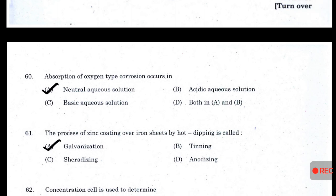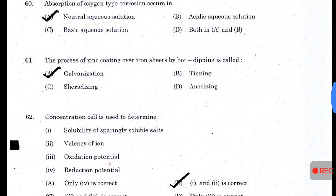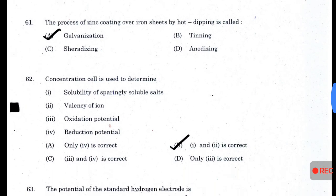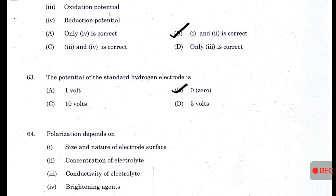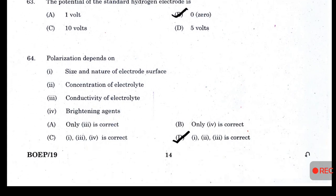Absorption-of-oxygen type corrosion occurs in neutral aqueous solution. The process of zinc coating over iron sheets by hot dipping is called galvanization. A concentration cell is used to determine — answer D — solubility of a sparingly soluble salt and valency of iron. The potential of the standard hydrogen electrode is zero. Polarization depends on size and nature of electrode surface, concentration of electrolyte, and conductivity of electrolyte — answer D — one, two and three are correct; brightening agent is wrong.